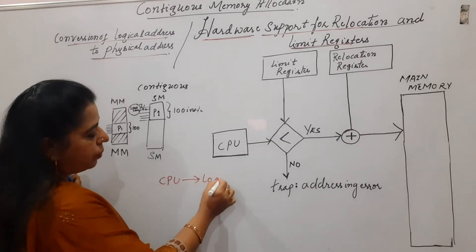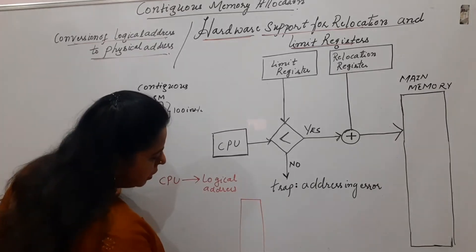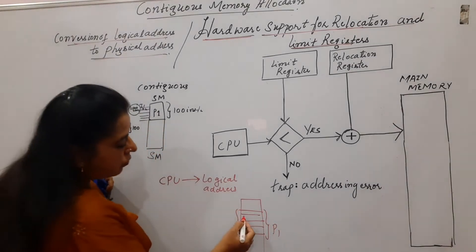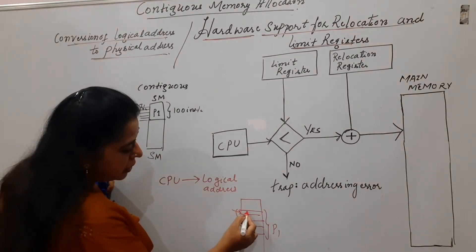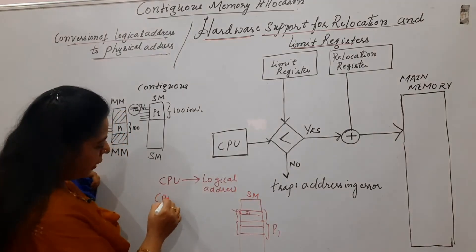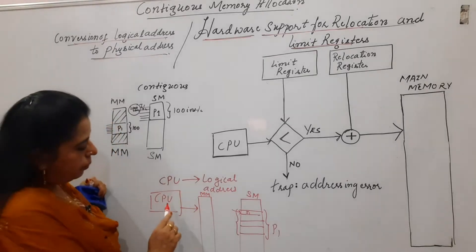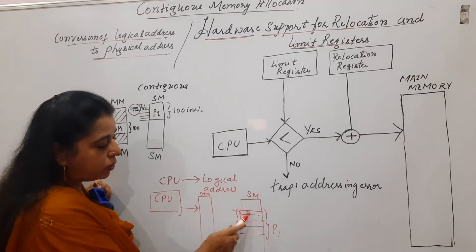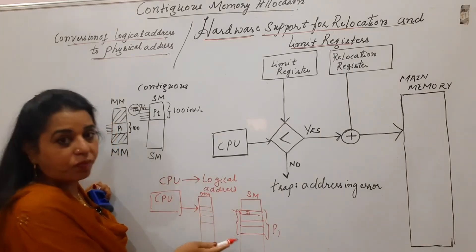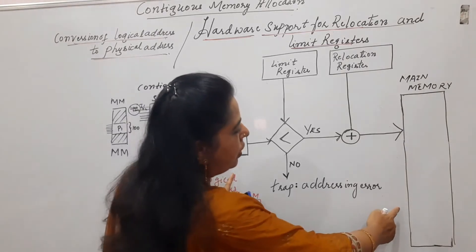What do you mean by logical address? Any memory location that is referred to in the secondary memory is the logical address. But during execution, the CPU has direct access to the main memory, not to the secondary memory. Any address that is present in the main memory we call a physical address, because it is a physical memory. So converting the logical address to physical address is what this hardware provides.